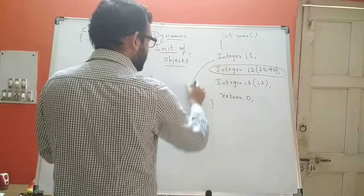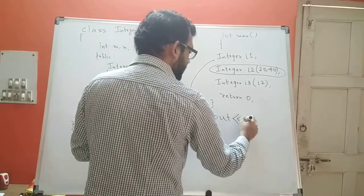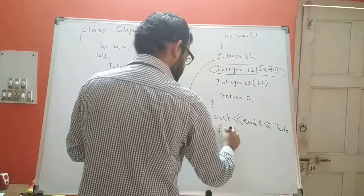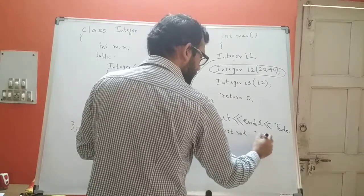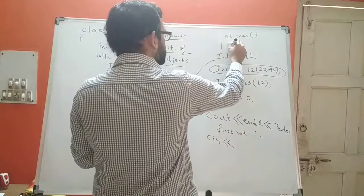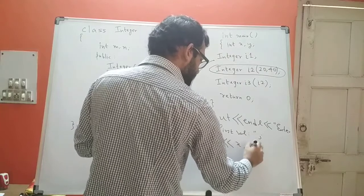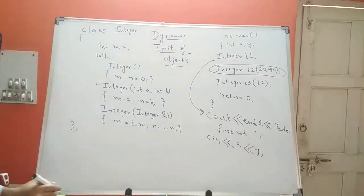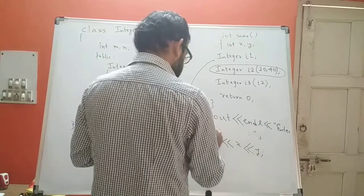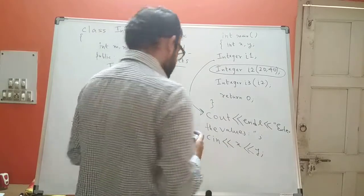So what I can do here is include a few statements. I can ask the user for values of the data members. I can print out a statement — let's say 'enter the values.' The user will enter two values, and I will accept them in two variables, let's call them x and y. The first value will be stored in x and the next value will be stored in y.